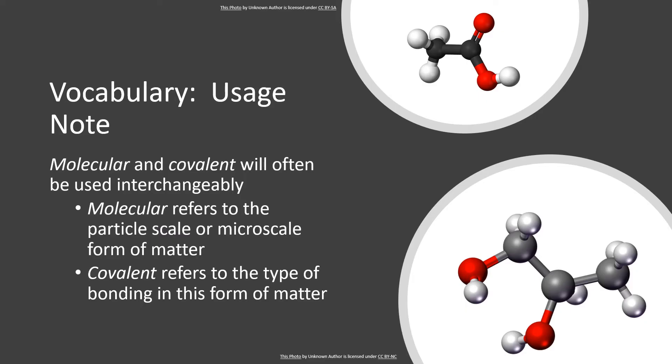Here at the beginning of the chapter, I also want to point out that I'll be using the terms molecular and covalent interchangeably. Formally speaking, molecular refers to how the atoms are arranged on the particle level scale or the atomic level scale. If the atoms group together to form a closed unit, which we call a molecule, then the compound is referred to as molecular.